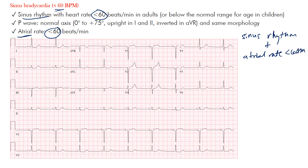The EKG machine may give you the ventricular rate, but the atrial rate is what we're focusing on. When determining sinus rhythm, we look at the P-waves, and when finding the atrial rate, we also look at the P-waves. So as long as you focus on the P-waves, that's where you'll find the answer.